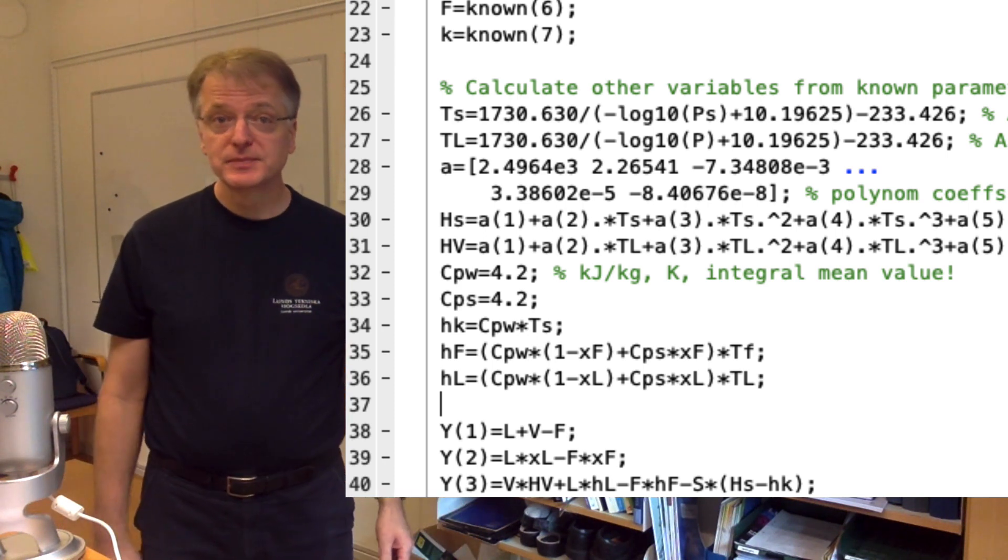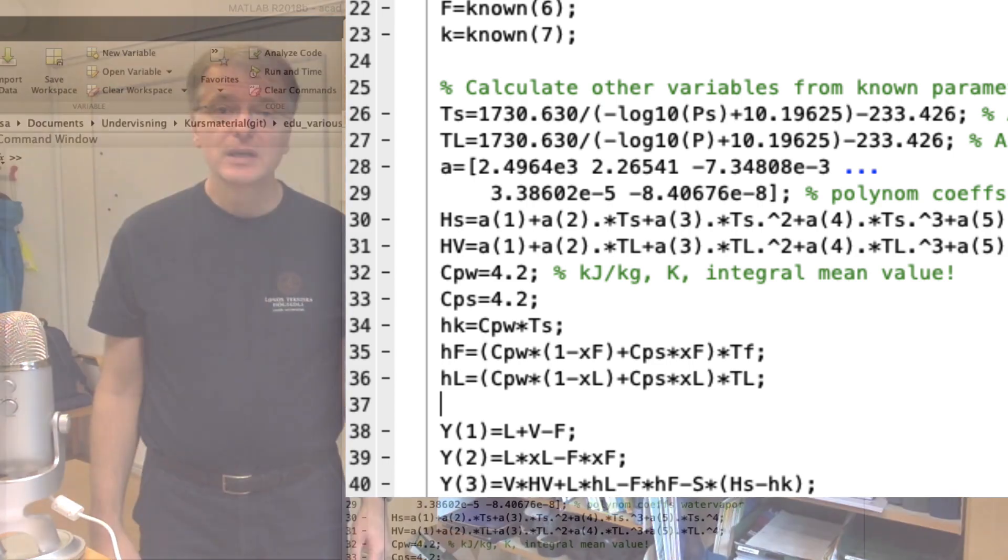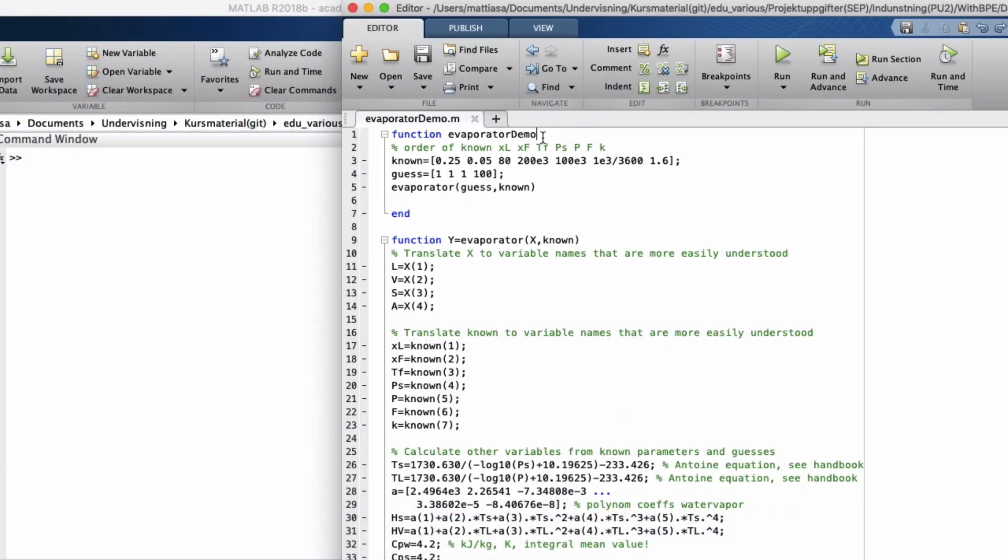Now we seem to be done, so let us run our code. Since our main function has no arguments, we can run the code by clicking the run button above and the output is our resulting residuals, which gives us a feeling of how wrong our guesses were.